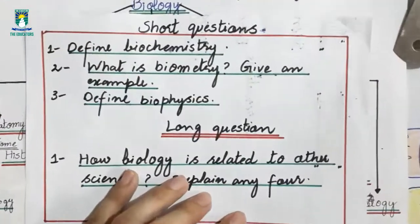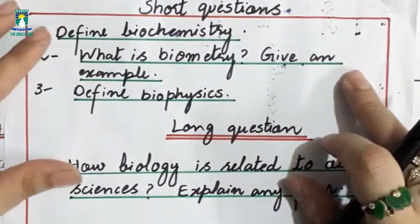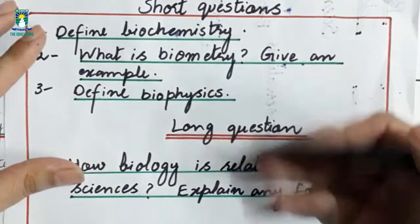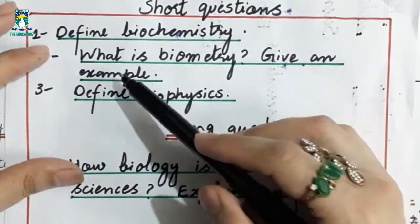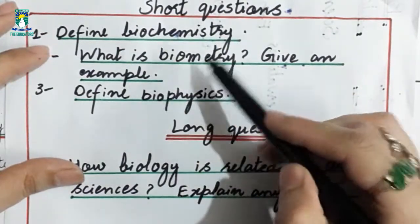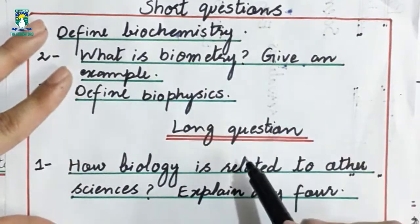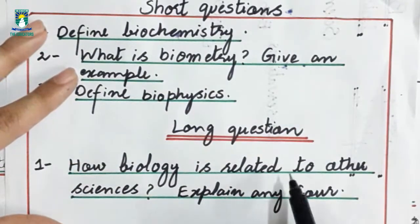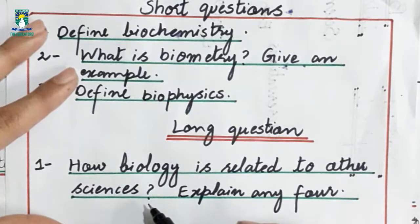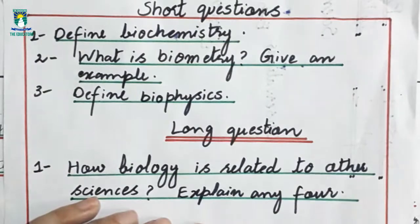Now we will discuss short and long questions from this topic. Short questions can include: Define biochemistry, What is biometry (give an example), Define biophysics. Long questions can include: How is biology related to other sciences? Explain any four or five. This is the form in which you can have short and long questions.